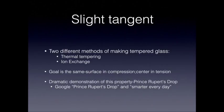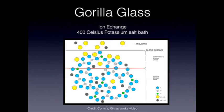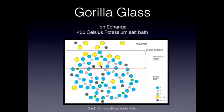Gorilla glass is made with the other method — ion exchange. The picture here is a screenshot from Corning's video on their website showing a schematic of the piece of glass. The gray line defines the surface of the glass, and the red line I've drawn roughly defines the surface portion versus the more central portion. You take the sheets created with the fusion draw process and immerse them in a 400 degrees Celsius potassium salt bath.